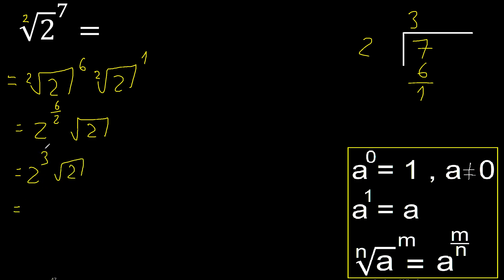2 multiplied 3 times: 2 multiplied by 2 is 4, multiplied by 2 is 8. Okay, finish.